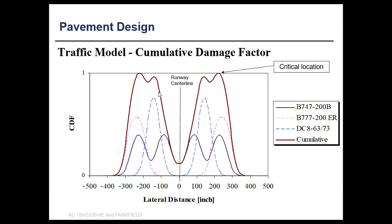This shows how damage is caused by different wheels. You can see that the Boeing 747 damage contribution is computed like this, and if you add all those damages, we call this the cumulative damage factor. Remember, all CDFs should sum to 1, and once this CDF equals 1, you can find your thickness.